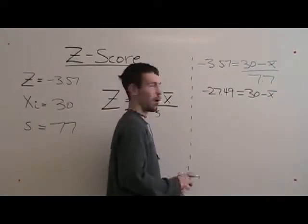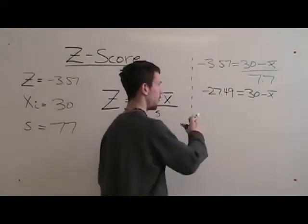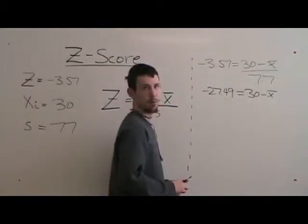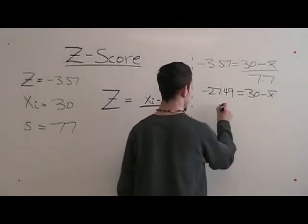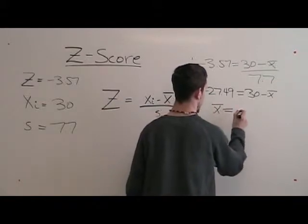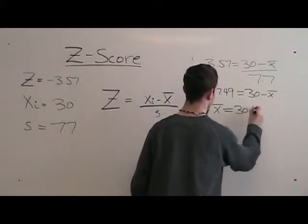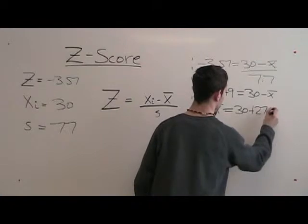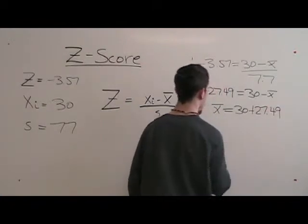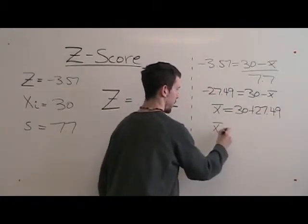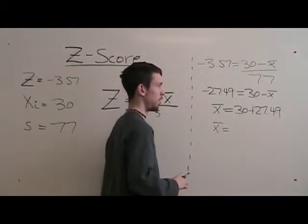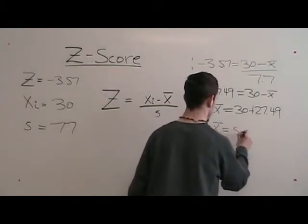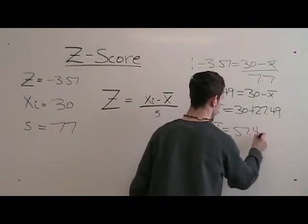Bring the x-bar over to the other side and bring negative 27.49 to the other side of the equals. Therefore, your x-bar is 30 plus 27.49, which is 57.49.